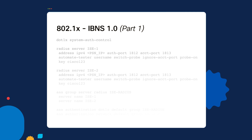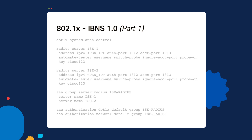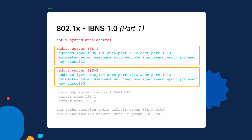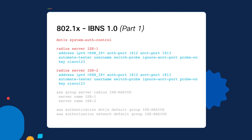In order to configure the 802.1x IBNS 1.0 configuration, you will need the following commands. The first command is the dot1x system-auth-control command, which enables 802.1x on the switch. The next two commands are the radius server commands, which configure the PSNs you want to send authentications to and receive authorization requests from. If you want to bundle these together, you can use the AAA group server command, which is recommended. In this case, we call the group ice-radius, and we have both servers within that group.